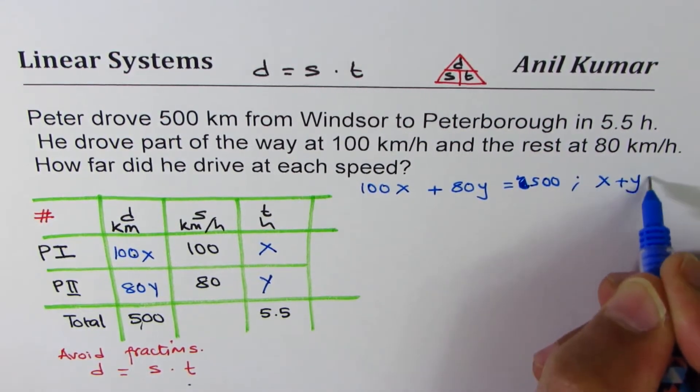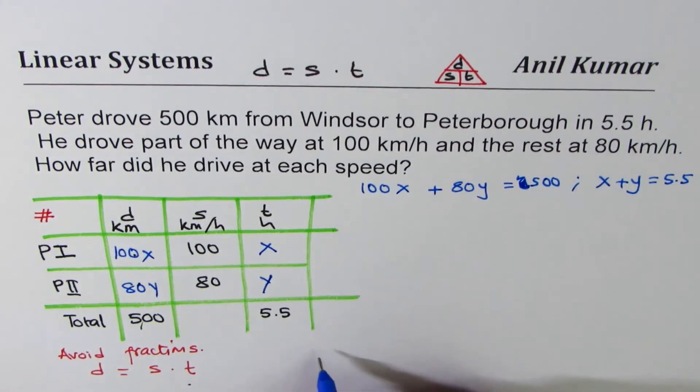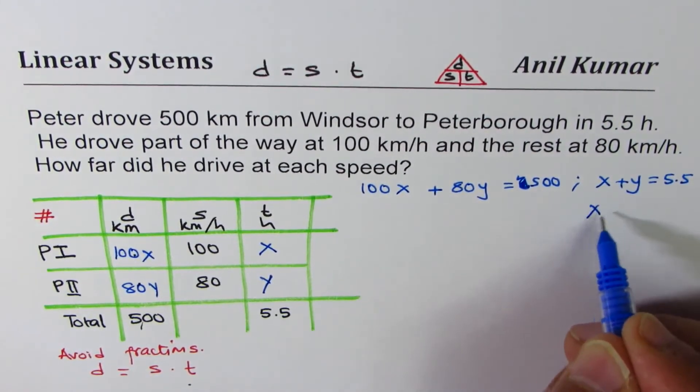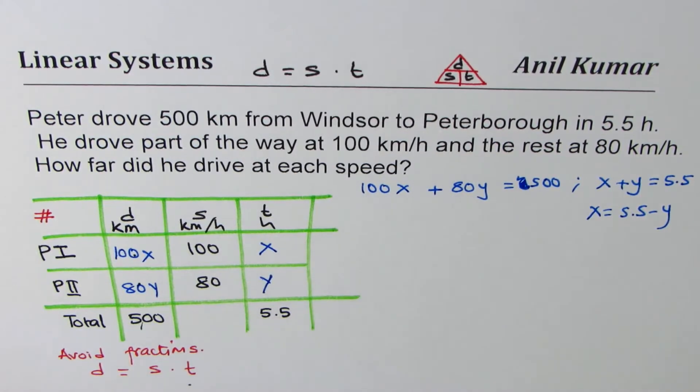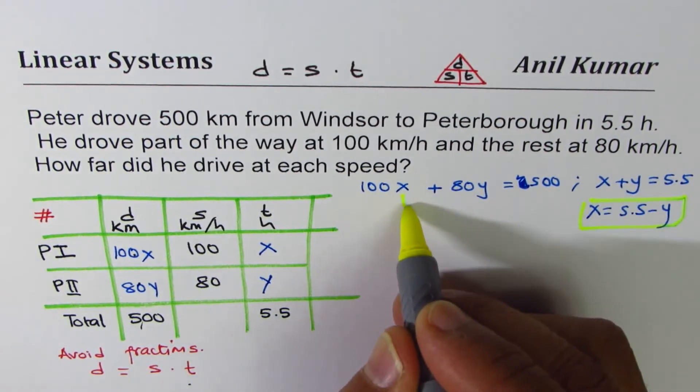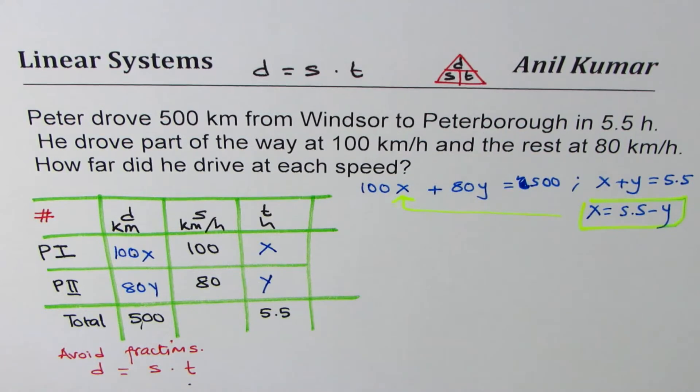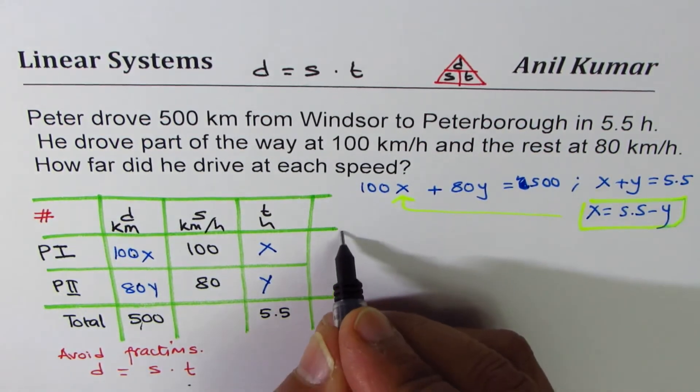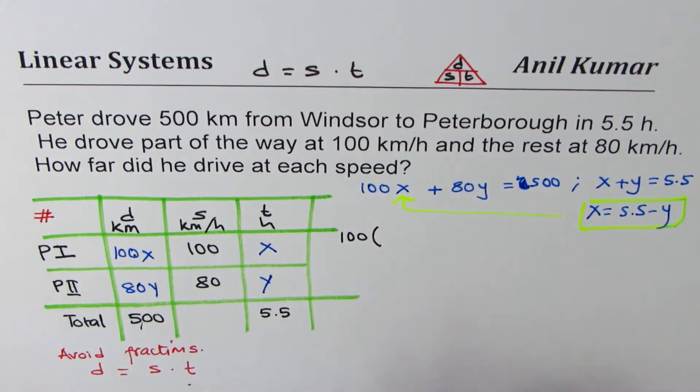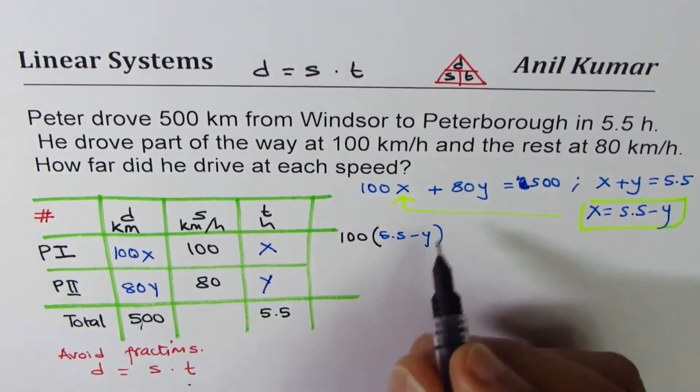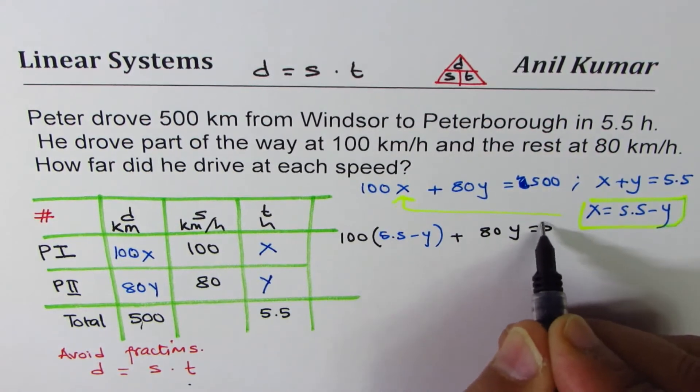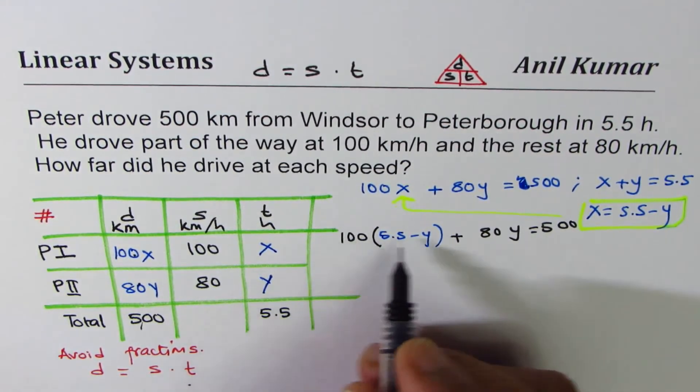We can isolate one of these variables. We can say x equals 5.5 minus y, substitute this here. We are going to substitute this value of x in this equation. So we get: 100 times (5.5 minus y) plus 80y equals 500. We can just open the bracket so it becomes 550 minus 100y plus 80y equals 500.